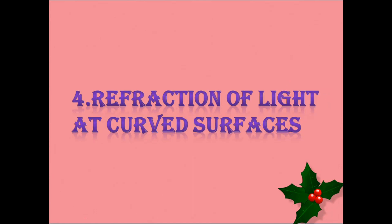The fourth chapter in physics is Refraction of Light at Curved Surfaces. This is one of the difficult chapters in physics. In this chapter you will cover the lens topic first. We have three formulas — the lens formula, the lens maker's formula, and one more. Refer to these formulas and practice problems with them.